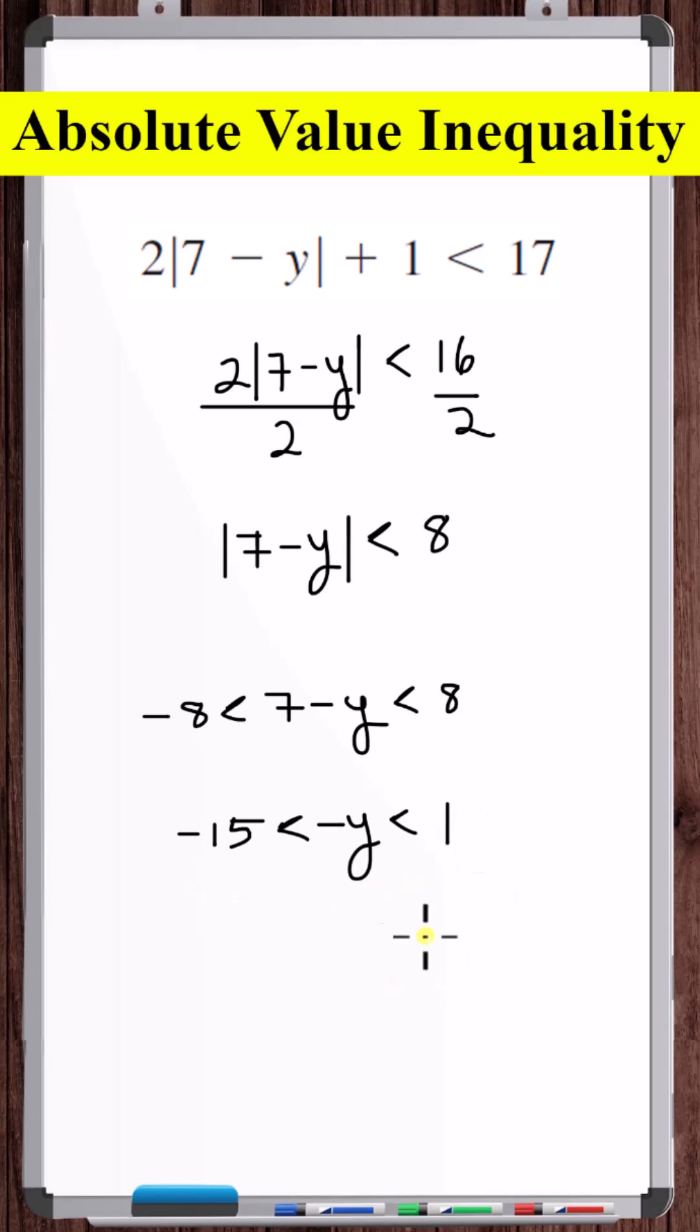Now let's multiply this entire inequality by minus 1. But when we multiply or divide an inequality by a negative number, we need to flip the inequality sign. But now let's just flip this entire inequality to put it in increasing order.